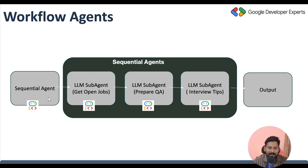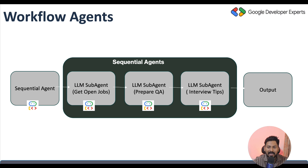The root agent defines the list of sub-agents but has no LLM capability itself. When you type a prompt like 'I am looking for a Google Cloud Architect role,' the first sub-agent fetches open positions, the second prepares interview questions for that role, and the third — using the open positions and interview questions — prepares an interview plan for you, giving a single consolidated output. This is the sequential agent.